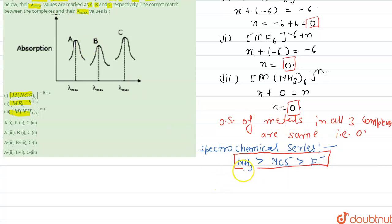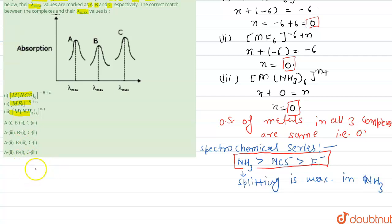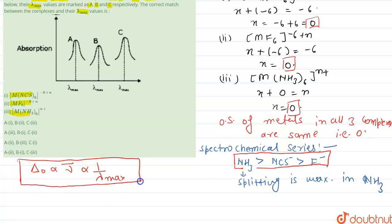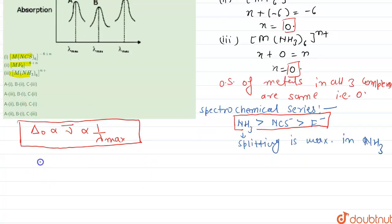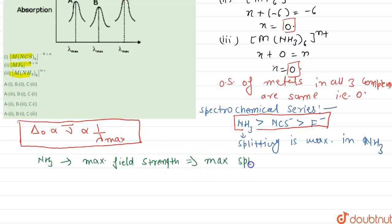Since ammonia is a strong ligand, the crystal field splitting (Δ) is maximum in NH₃. We know that the orbital splitting energy Δ is directly proportional to frequency, and frequency is inversely proportional to wavelength. Therefore, the ligand with maximum field strength has minimum wavelength. Since NH₃ has maximum field strength, maximum splitting occurs and it has minimum wavelength.